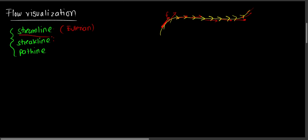What is a streak line? A streak line is the instantaneous locus of all fluid particles that have passed a given point. You can understand it as a snapshot of certain fluid particles. Suppose these fluid particles are flowing and you take your camera and click their picture — capturing all the molecules and their current positions. This line you get is known as the streak line.